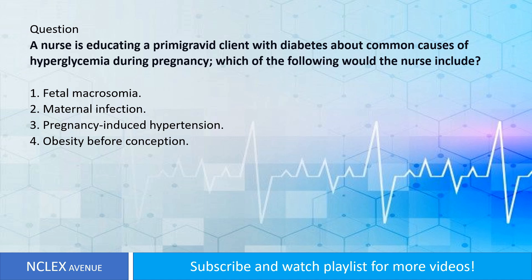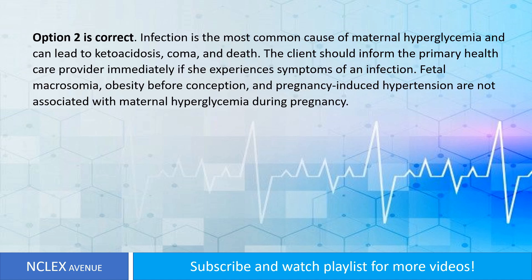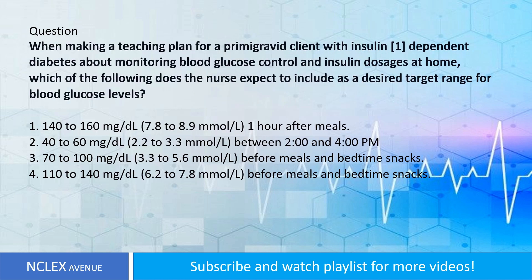Question: A nurse is educating a primigravid client with diabetes about common causes of hyperglycemia during pregnancy. Which of the following would the nurse include? One: fetal macrosomia. Two: maternal infection. Three: pregnancy-induced hypertension. Four: obesity before conception. Answer: Option two is correct. Infection is the most common cause of maternal hyperglycemia and can lead to ketoacidosis, coma, and death. The client should inform the primary health care provider immediately if she experiences symptoms of an infection. Fetal macrosomia, obesity before conception, and pregnancy-induced hypertension are not associated with maternal hyperglycemia during pregnancy.